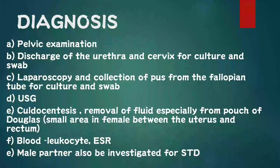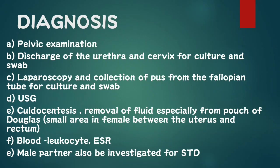Diagnosis: Pelvic examination with discharge from the urethra and cervix sent for culture and swab; laparoscopy with collection of pus from the fallopian tube for culture and swab; ultrasound (USG); culdocentesis, which is removal of fluid especially from the pouch of Douglas — a small area in females between the uterus and the rectum; and blood examination for leukocyte count and ESR. The male partner is also investigated for sexually transmitted disease.